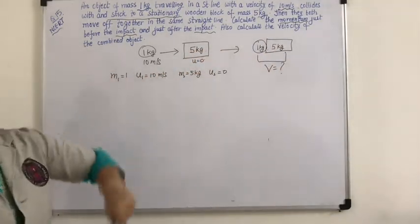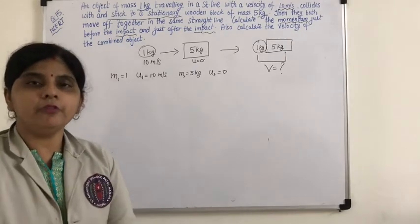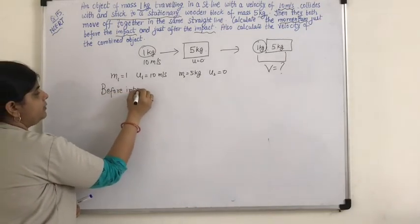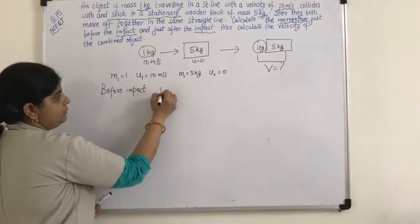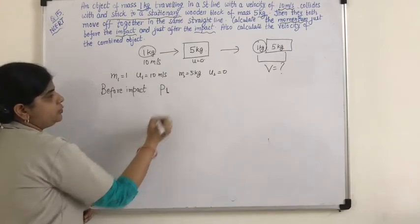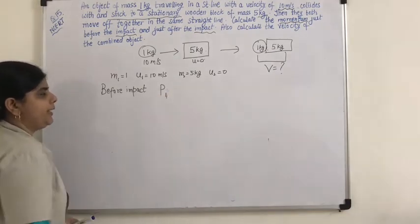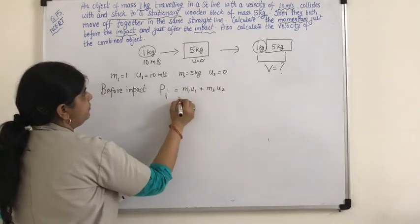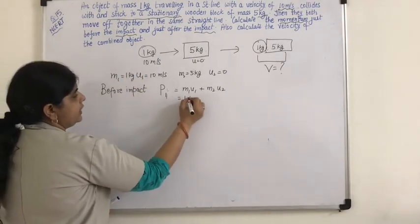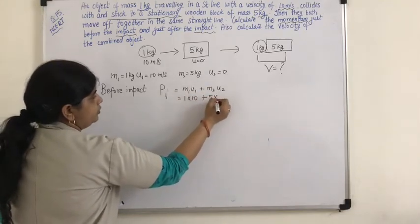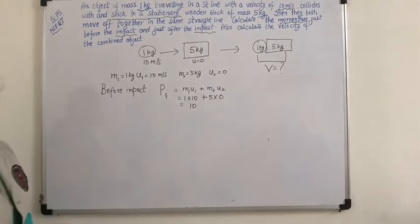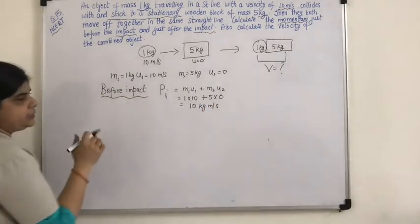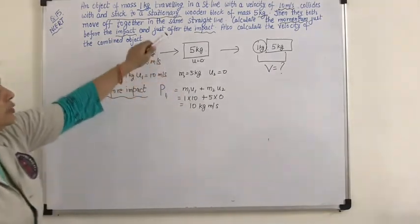Calculate the momentum just before the impact. Momentum before collision P1 can be written as M1·U1 plus M2·U2. M1 is 1, U1 is 10, so 1 into 10 plus M2 is 5 and U2 is 0. So P1 equals 10 kg·m/s. Momentum just before impact is 10 kg meters per second.